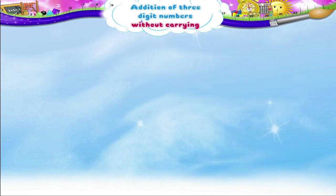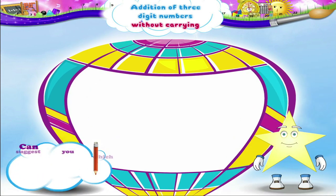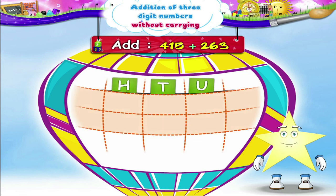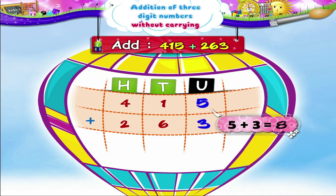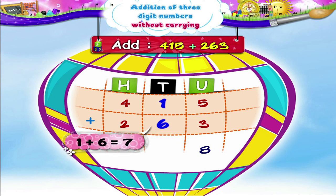Starry, can you suggest which two numbers we should add? Okay, let's find the sum of 415 and 263. See! I have arranged the numbers in proper columns. Now, let's add the units place digits. 5 units plus 3 units equals 8 units. Now, let's add the tens place digits. 1 ten plus 6 tens is equal to 7 tens.